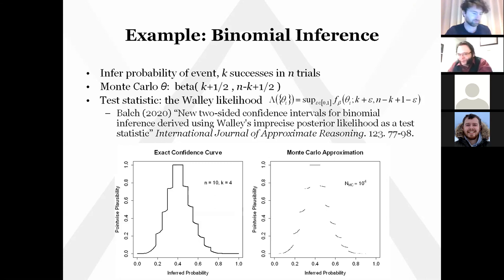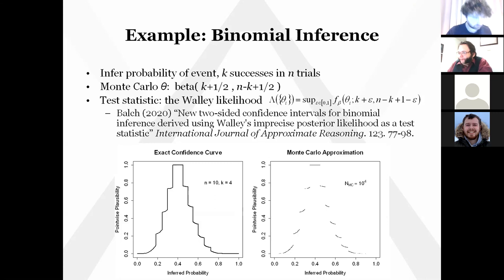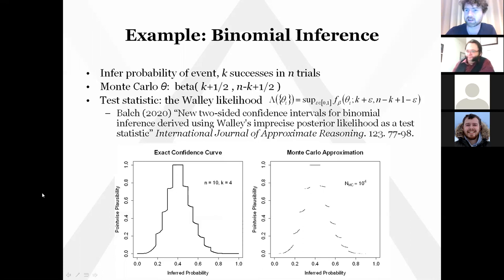Phrasing it in terms of plausibility: the plausibility of a true hypothesis should over repeated samples of the data have a right-of-uniform distribution — just as you shouldn't consistently assign high belief to a false proposition, you also shouldn't consistently assign low plausibility to a true hypothesis. Those two statements are exactly equivalent, just different ways of looking at it. Phrasing validity in terms of plausibility on a single true parameter gives us a compact criterion for testing these structures.